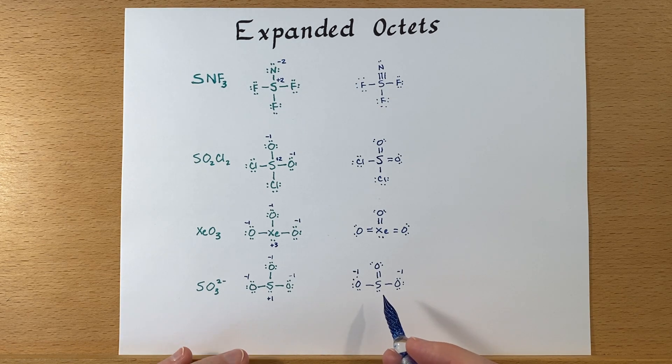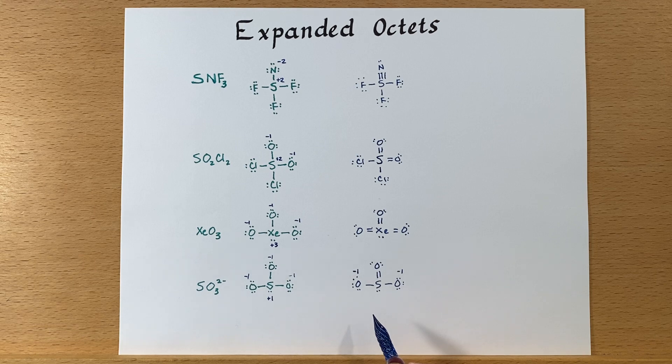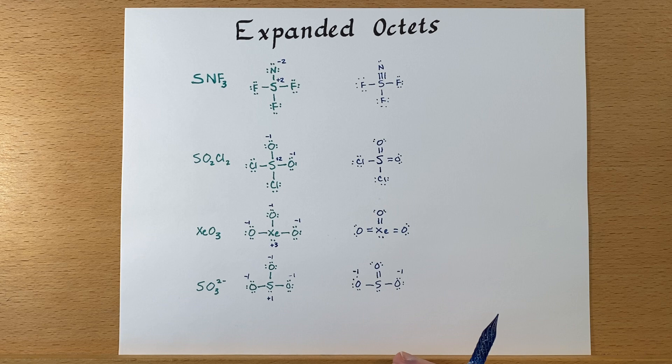So these are some examples with expanded octets, and using formal charges to evaluate how well we've drawn a Lewis structure and see if we can make it a little bit better. And typically, by doing this, it tends to agree more with what we observe experimentally.